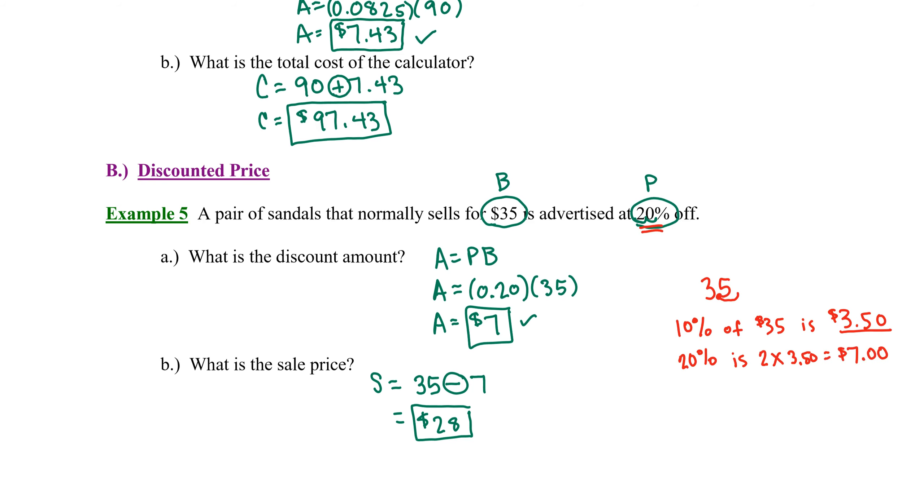Another common percent for tips is 15%. 15% is the original 10% that was easy to calculate, plus 5%. Well, 5% is half of 10%. So half of $3.50 is $1.75.